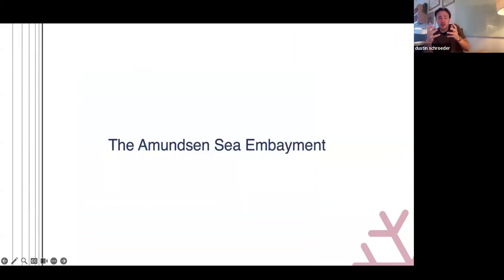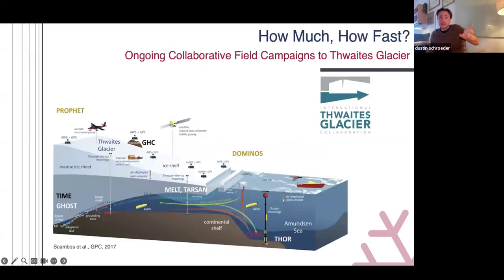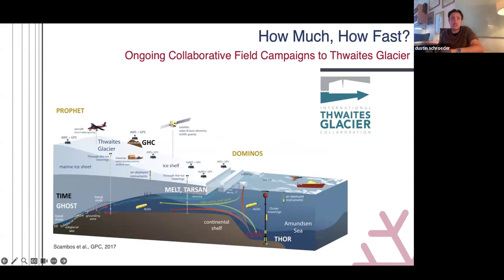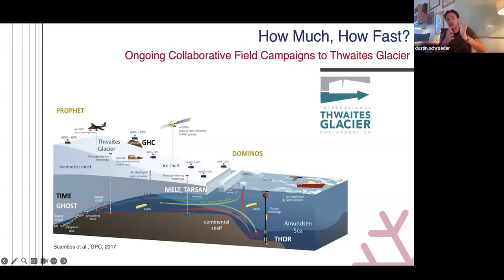Now I'll talk about glaciers with names you might have heard of. The Thwaites Glacier is in the news a lot. It's considered the most potentially unstable glacier in West Antarctica because of its landward sloping bed — the fastest changing glacier right now. We just ended a large multi-year international collaboration where people could only propose to study Thwaites. Everybody is looking at Thwaites because we think it's the most likely to trigger large-scale retreat.